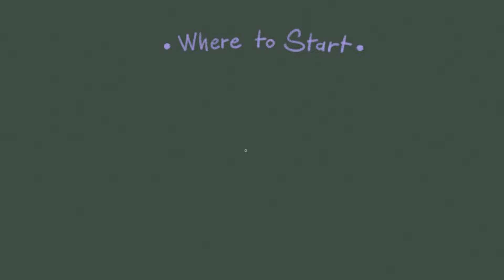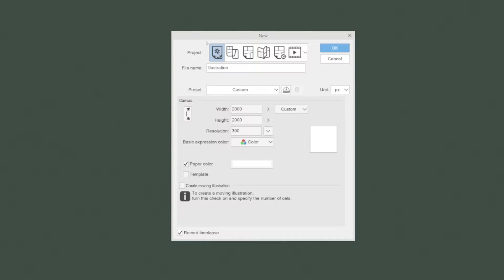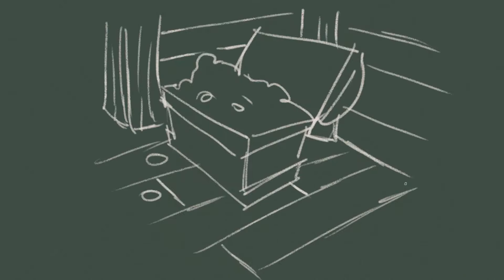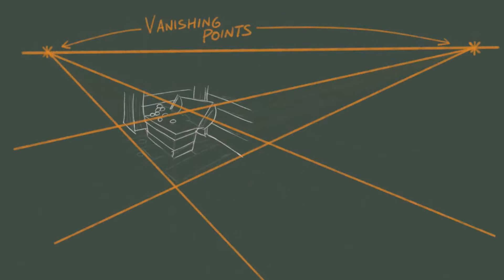Where to start? I always like to start with a good idea. Perspective grids and technical aspects always come later. So, in order to start, I make a canvas large enough and I draw until I find a concept that I like. At that point, I refine the sketch roughly to get a more precise idea. At this stage, I can also figure out how many perspective points are needed.